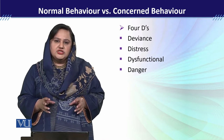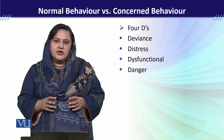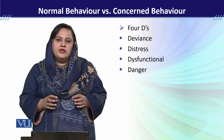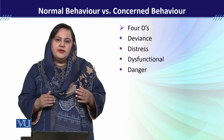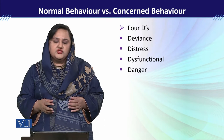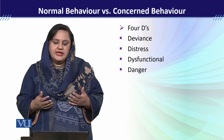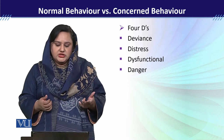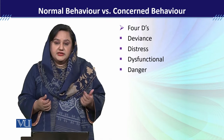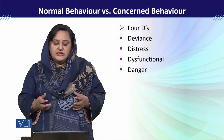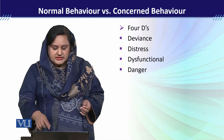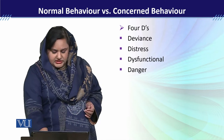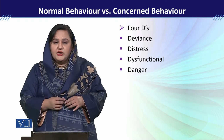دوسری dimension جو ہمارے لئے understand کرنا ضروری ہے وہ ہے abnormal behaviors کے 4Ds، جس کے اندر ہم psychological disorders کو understand کرتے ہیں۔ وہ 4Ds ہیں: deviance، distress، dysfunctional، اور danger۔